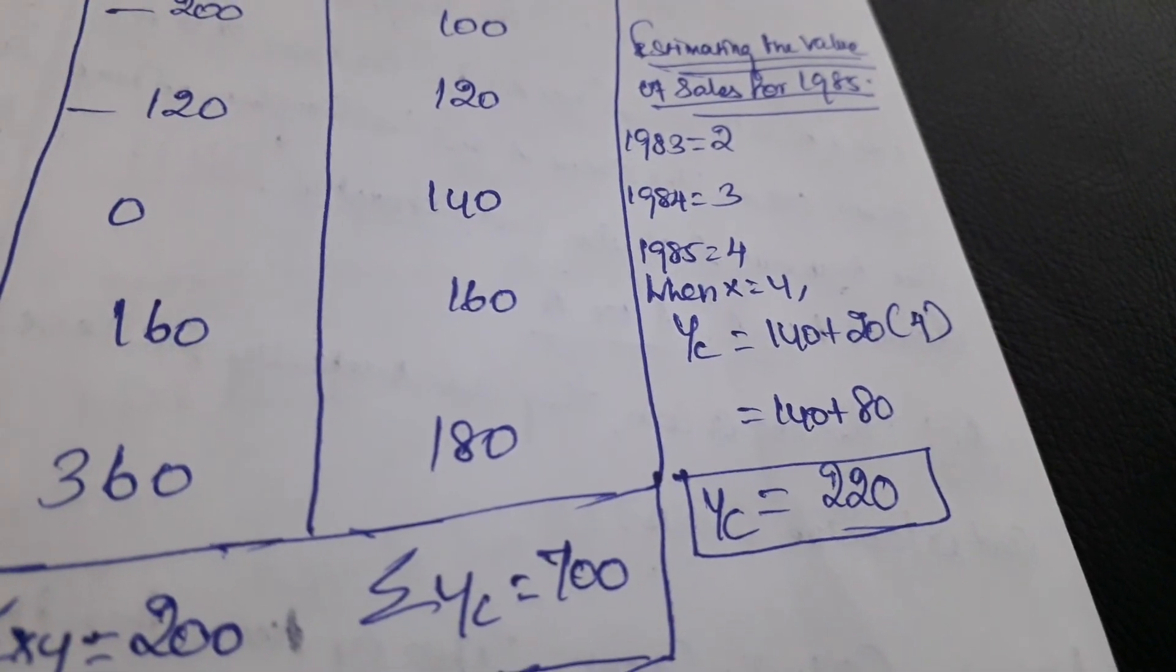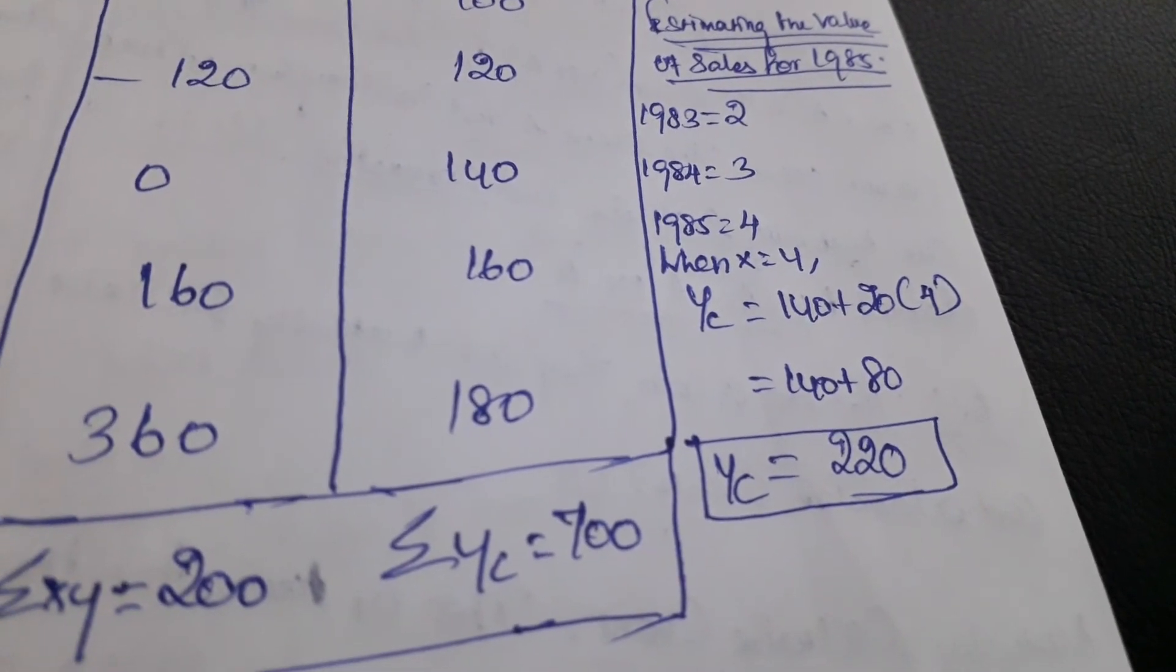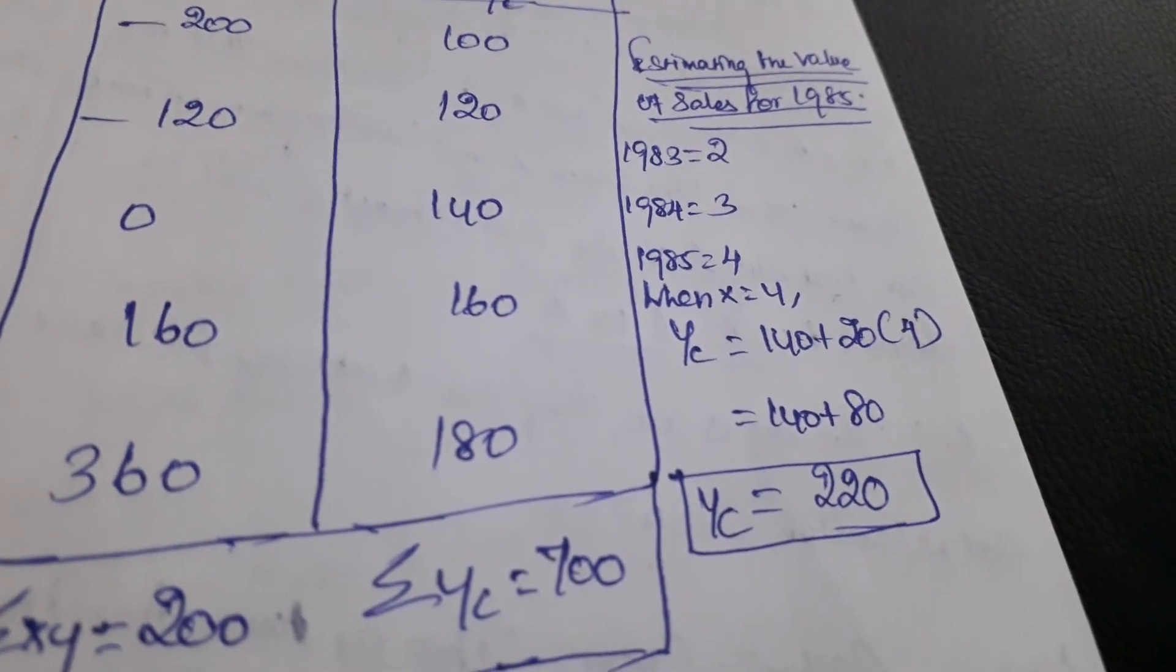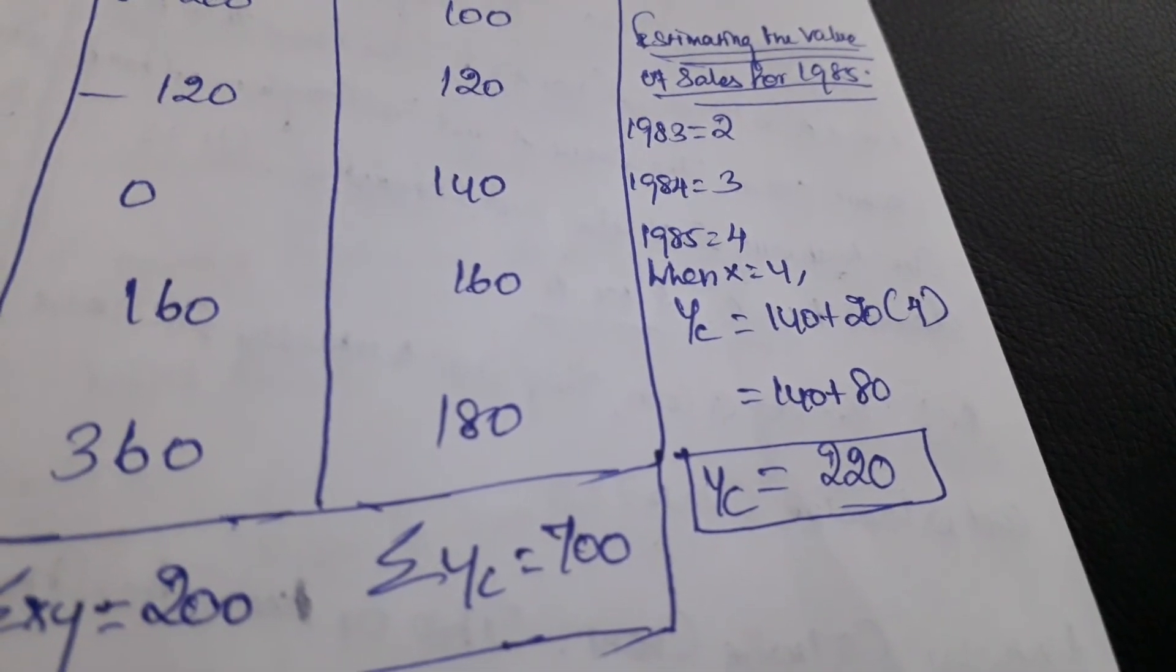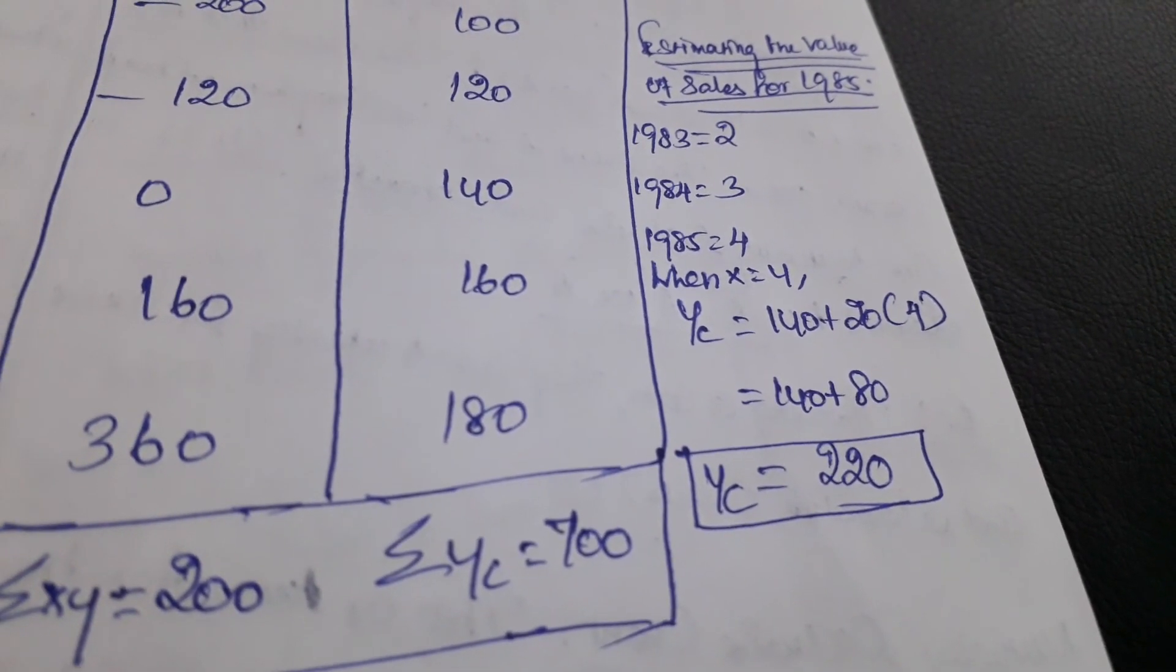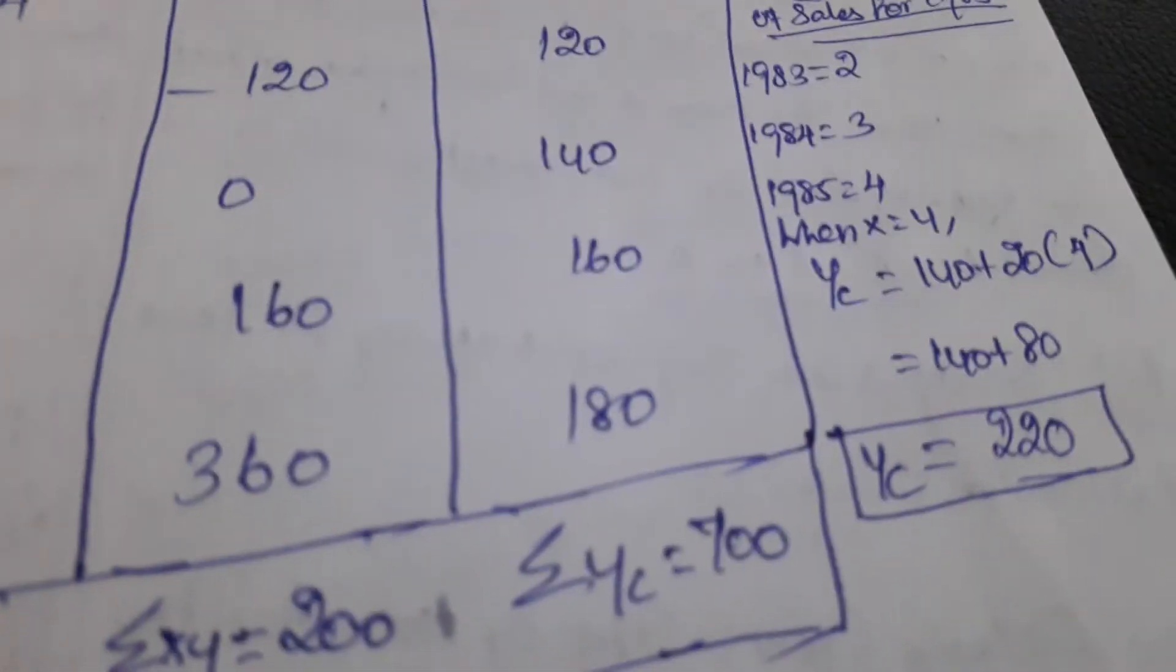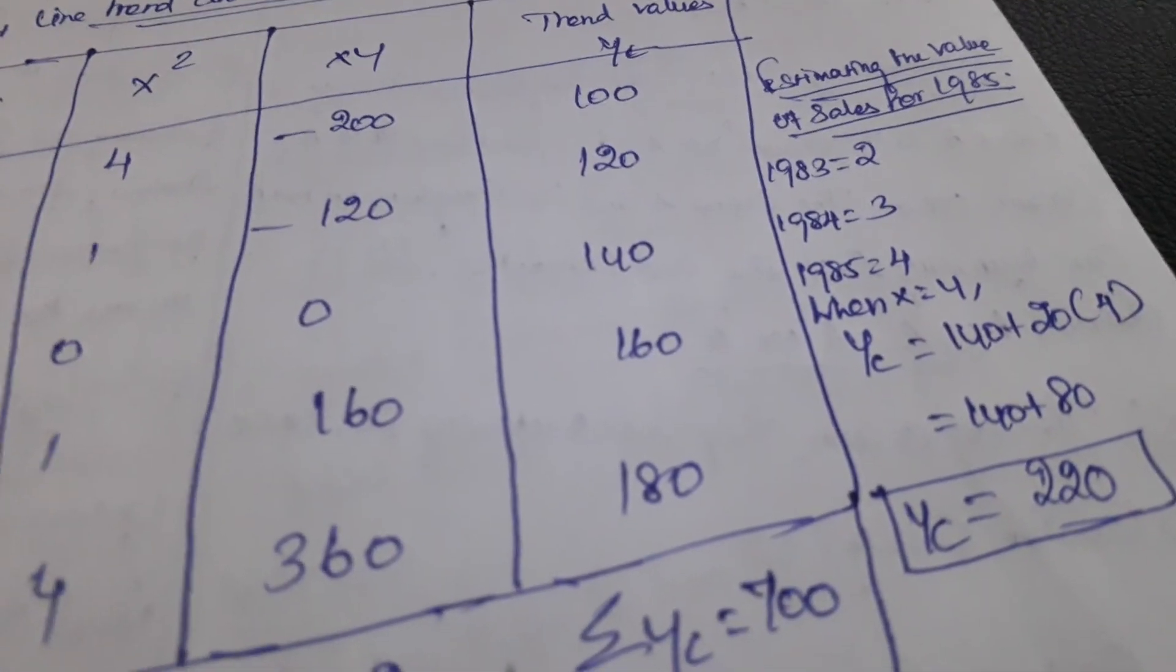140 + 80 = 220. We get the trend value as 220. This is the estimation of the sales value for the year 1985. Thank you. We will see you again with another session. Until then, stay tuned, stay blessed. Bye.